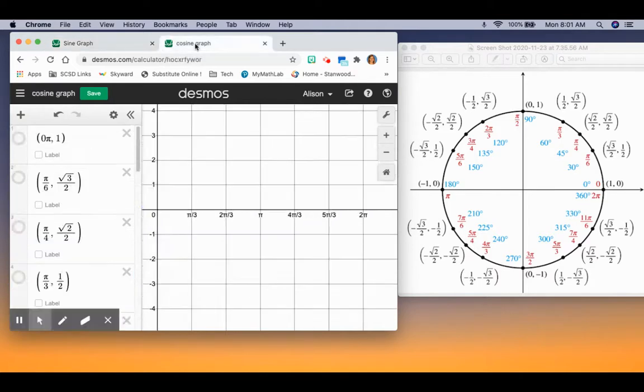Now for cosine. Cosine is our x-coordinate over our hypotenuse, and our hypotenuse is one. So it's the same idea, but using the x-coordinates all the way around. My first point is zero pi, and our x-coordinate is one.